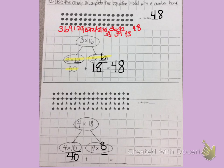4 times 8 is 32. Sorry, my dogs were distracting me. 40 plus 32, I'm going to rewrite it on the side to find my solution. 0 plus 2 is 2, 4 plus 3 is 7. 40 plus 32 is 72. 4 times 18 is 72.